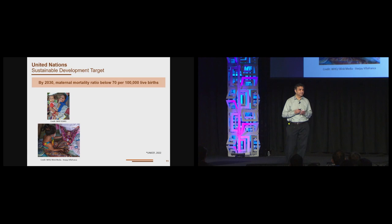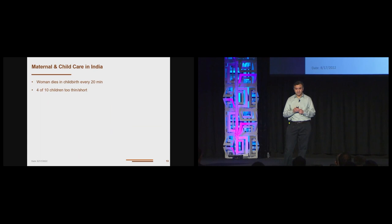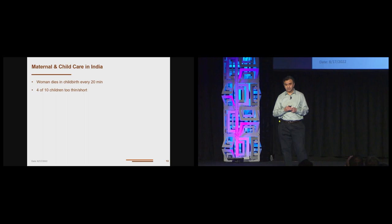So this project is motivated by the UN Sustainable Development Target, that by 2030, the maternal mortality ratio should be below 70 per 100,000 live births. Where we are today in the world, Western Europe, the lowest United States, the maternal mortality is below the UN target but rising. In the developing world, the rates are falling, but for example in India, the numbers are higher than the UN target. What that means concretely then is that a woman dies in childbirth every 20 minutes in India.